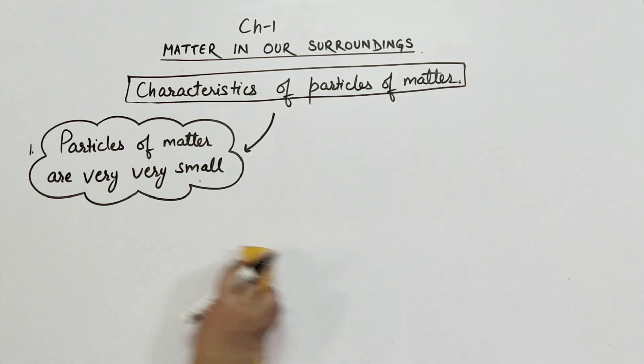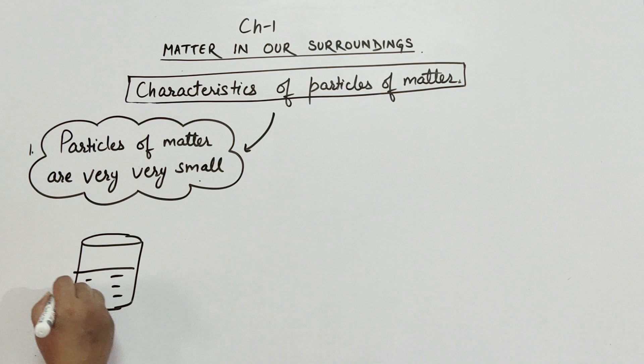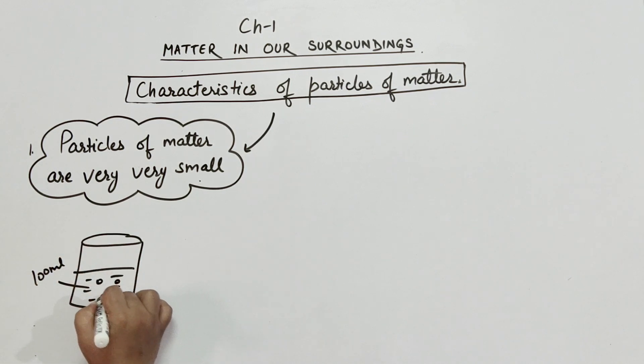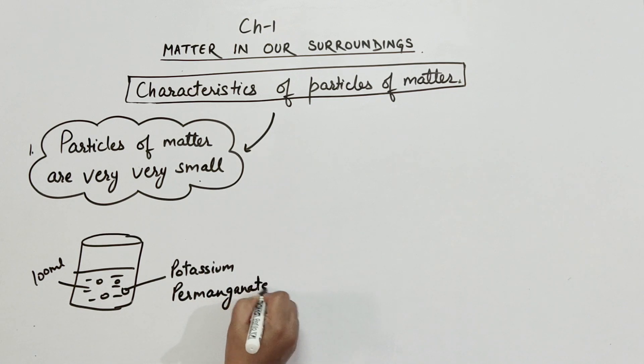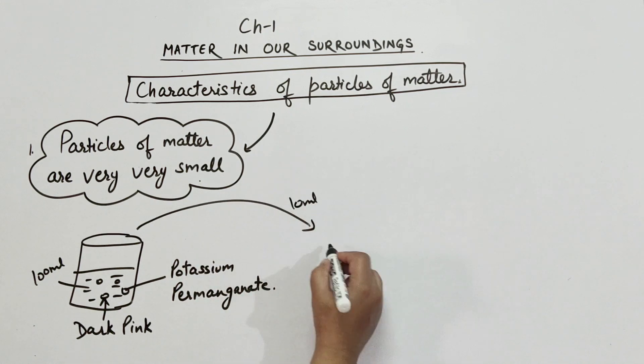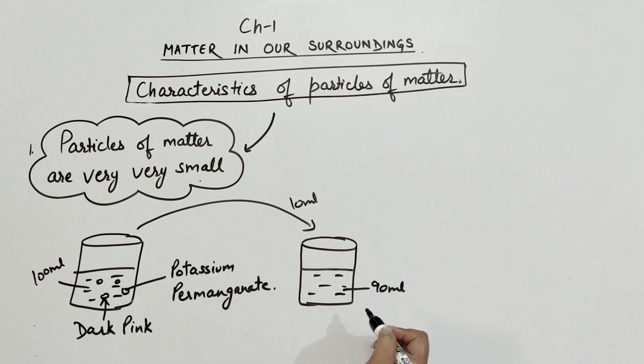Let's discuss the first property: particles of matter are very very small. For this, we will perform an activity. Take 100 ml water in a beaker, add two to three crystals of potassium permanganate. The solution will become dark pink in color. Now take about 10 ml of this solution and put it in another beaker containing 90 ml of water so that total volume will become 100 ml.